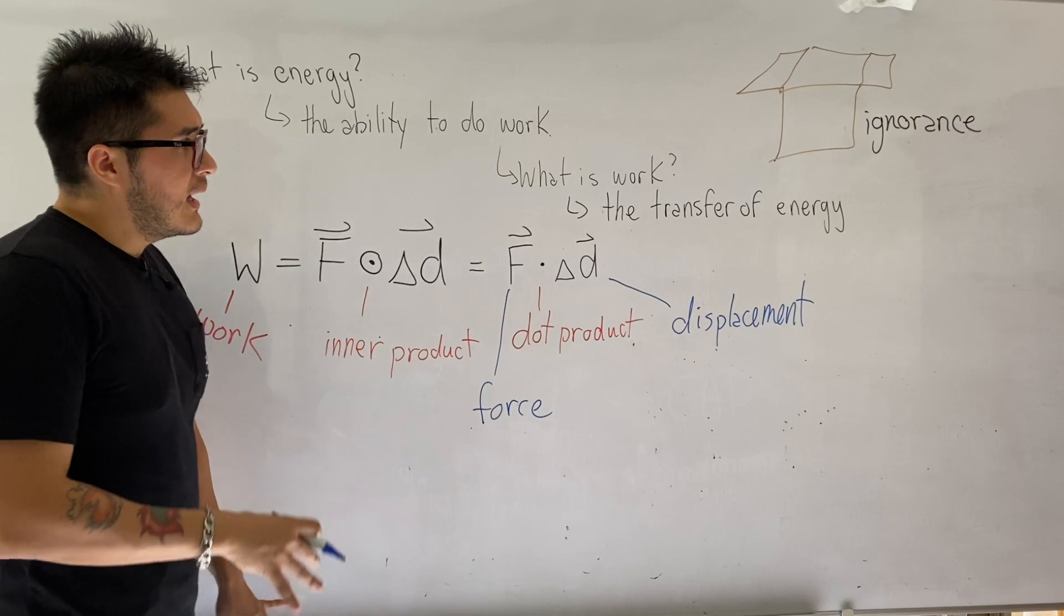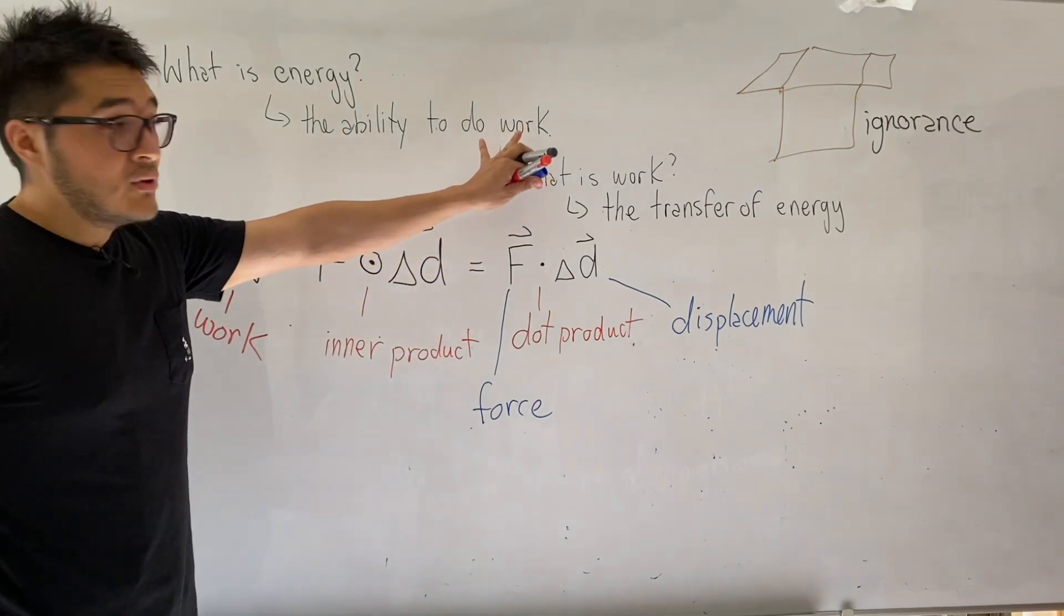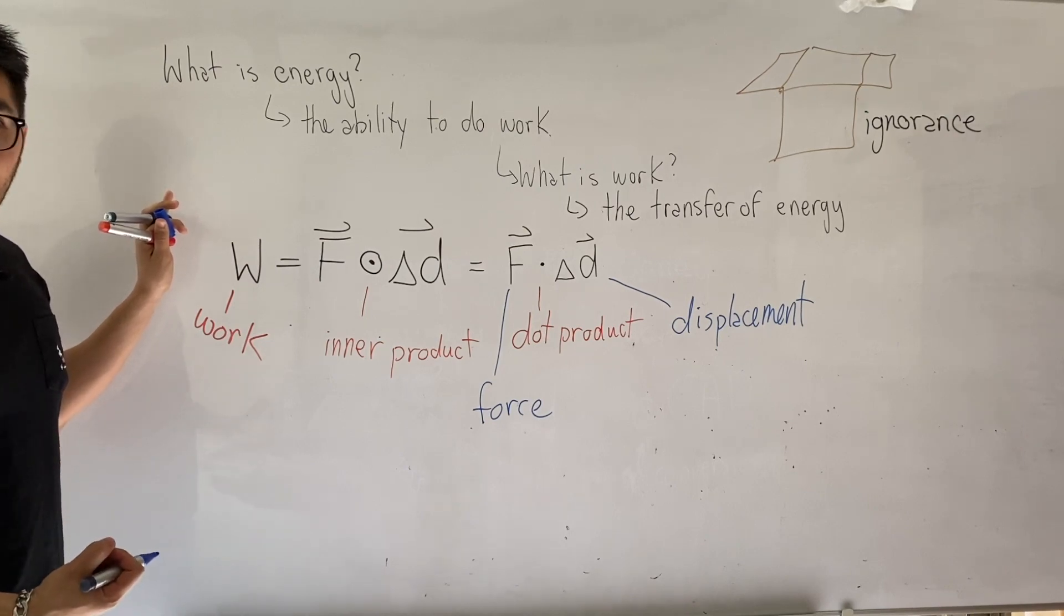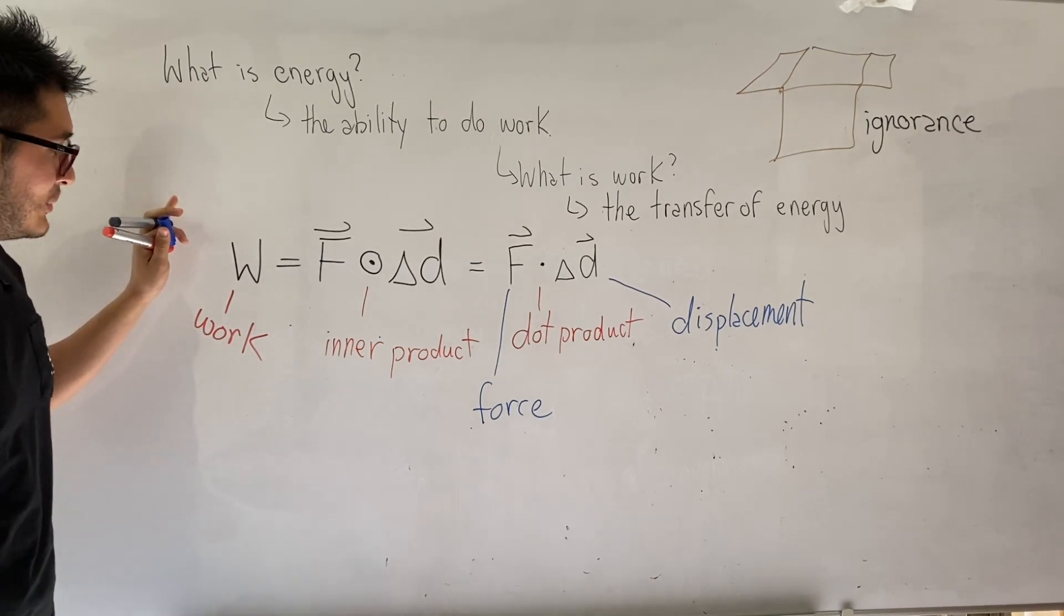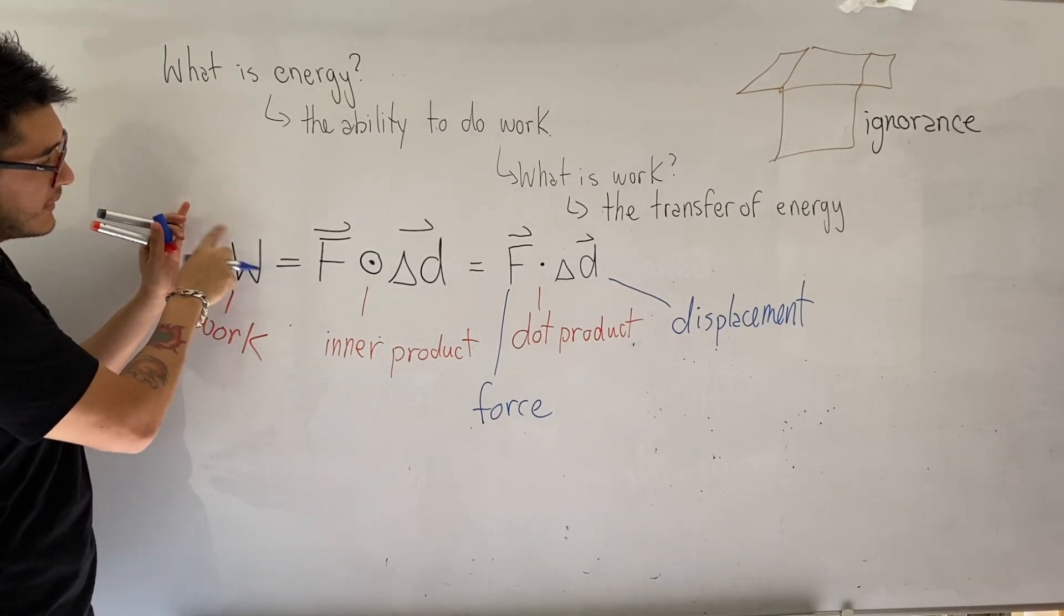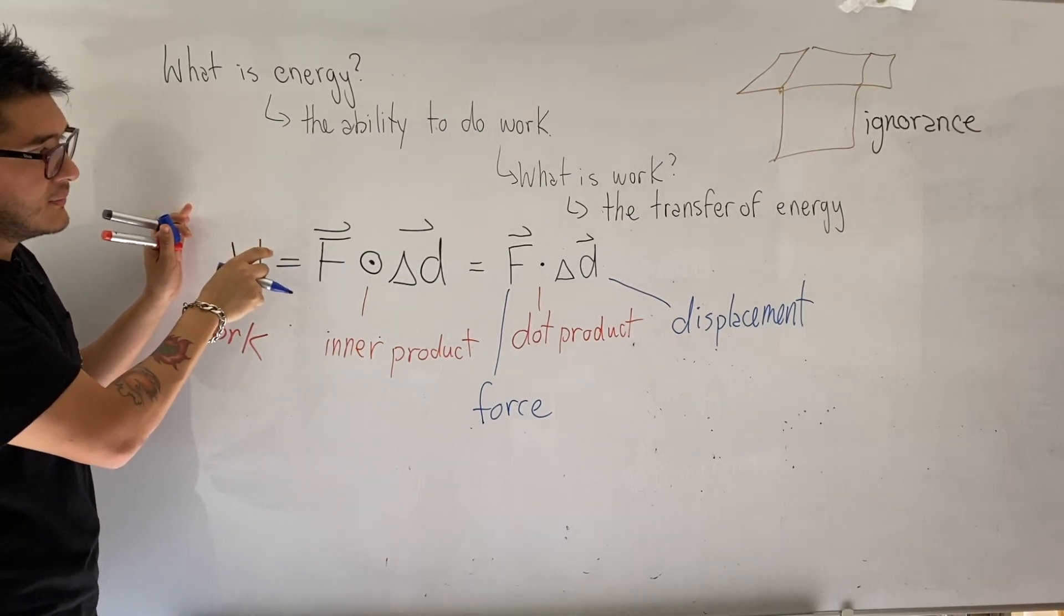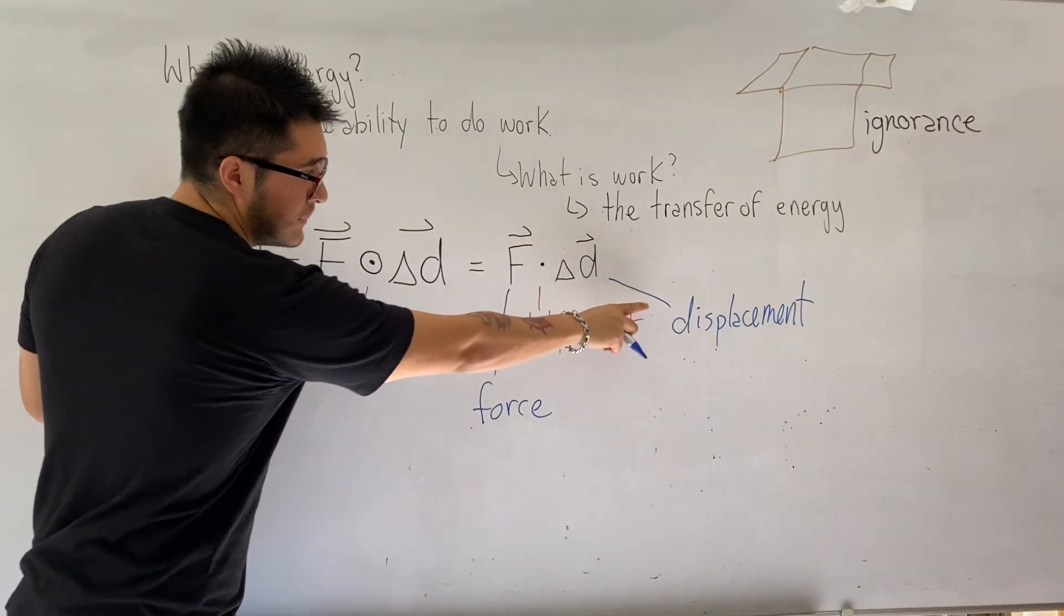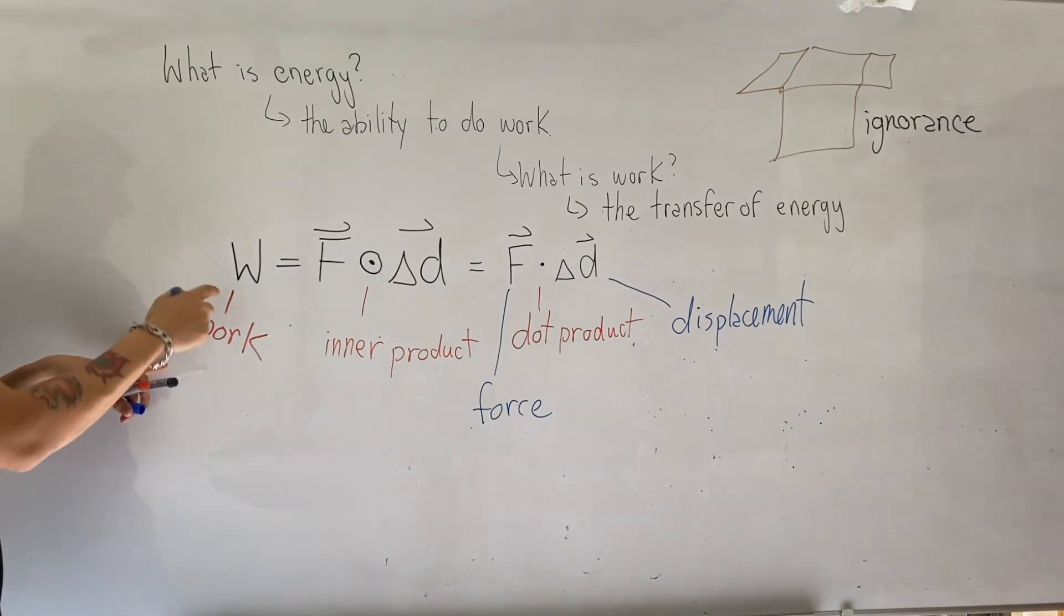Again, we couldn't come up with a good definition of work. The best thing we can do is try to understand the formula so we can calculate it and hope that we understand it through different examples. To calculate work, notice that the left side there's no vector sign on it, but on the right side we have a vector for the force and we have a vector of displacement. So work, since it has no vector sign, it must be a scalar quantity.